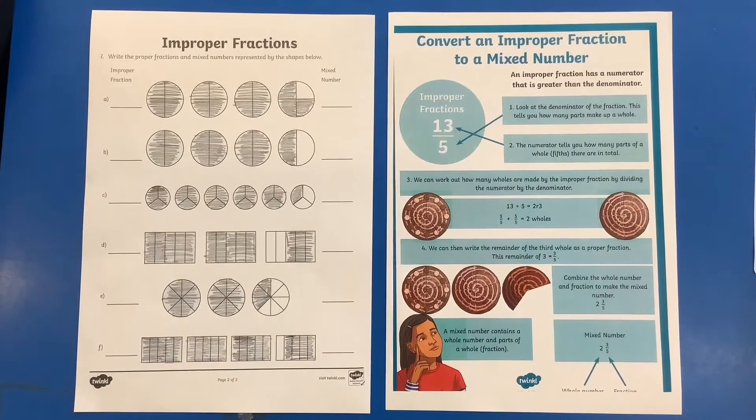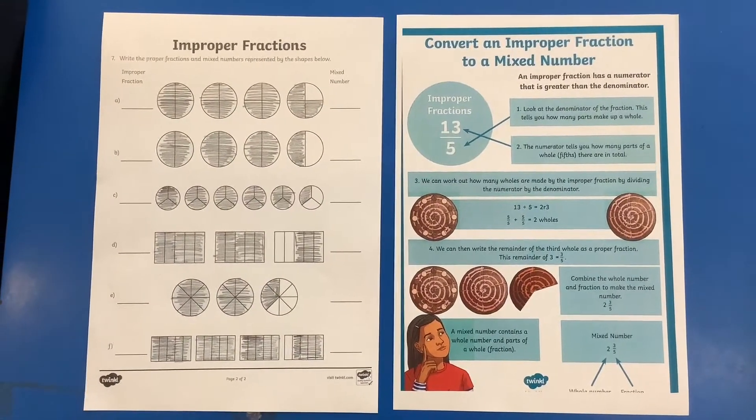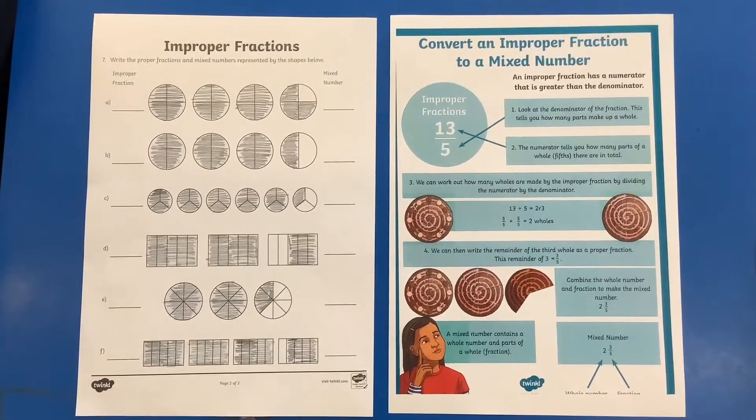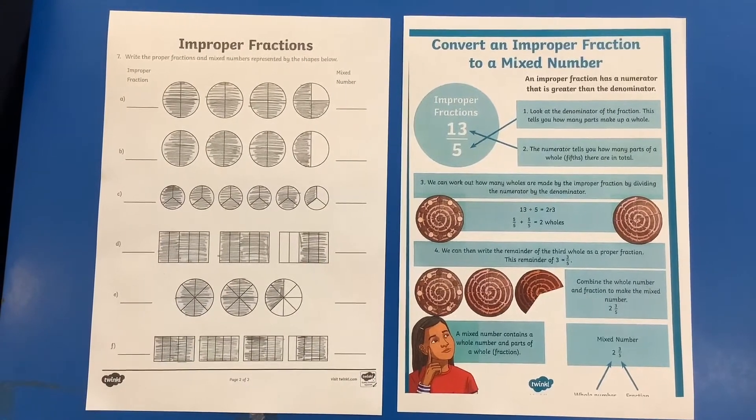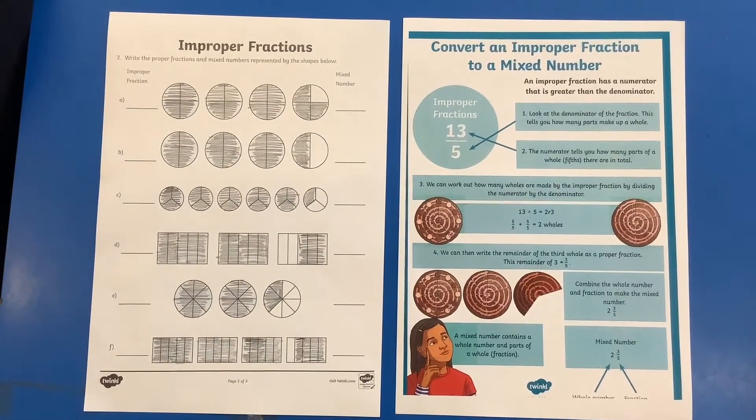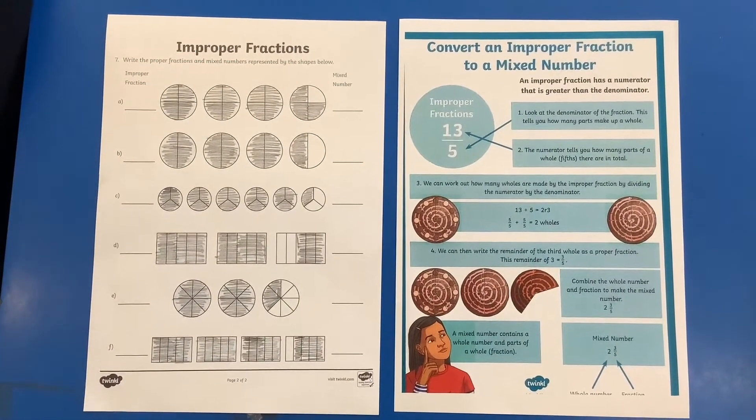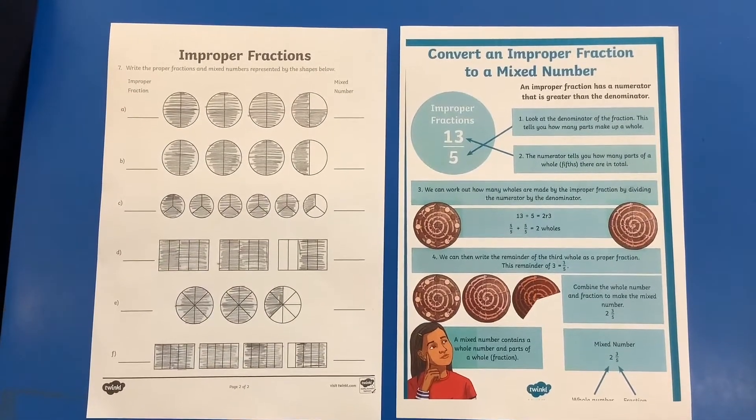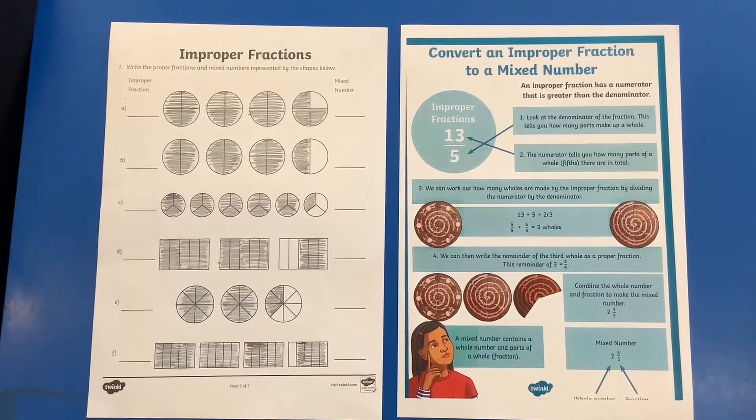Okay, so here's another fraction lesson, and this time we've got improper fractions. So improper fractions is where the number on the top, the numerator, is bigger than the number on the bottom, the denominator. So in your pack you should have these two sheets.